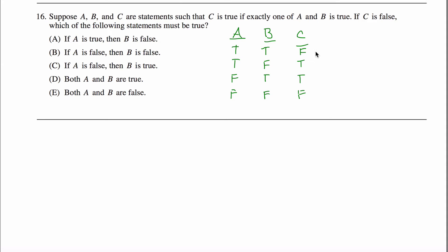If C is false, now I'm talking about this case and this case — which of the following statements must be true? If A is true, then B is false. No, because right here A is true but B is not false, and I'm in this special case. It's not this one.